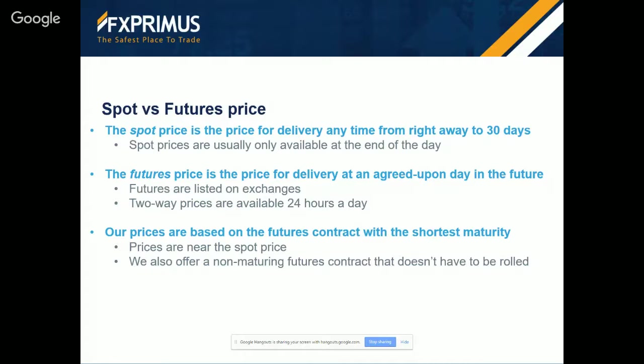Futures do have one disadvantage, which is that eventually the contract matures. For example, the near contract in WTI expires on September 20th. If you want to hold oil past that date, you have to close out your position and open a new one, which usually entails a loss because longer-dated contracts tend to have a higher price than shorter-dated contracts. To get around that problem, we also offer a contract based on the futures that doesn't mature. Sometimes this kind of contract is referred to as spot, but that's simply wrong — that's not what it's called in the oil industry.